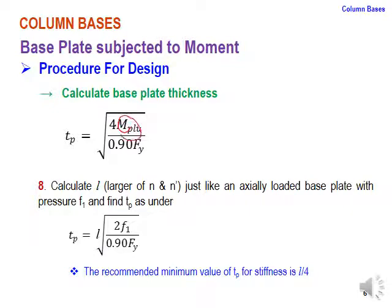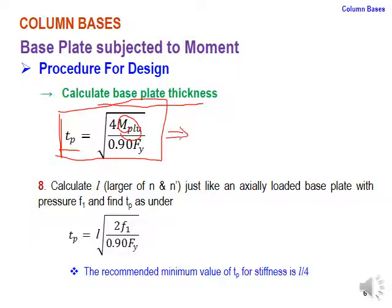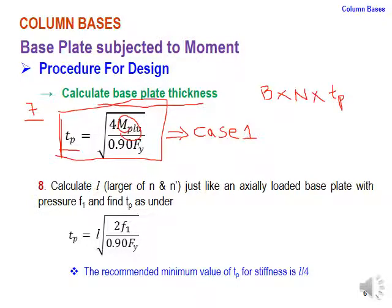Once Mplu is known, the base plate thickness is: tp = √(4Mplu / 0.90 fy). This gives the thickness for Case 1 (e ≤ N/6). The final design results are reported as B × N × tp.